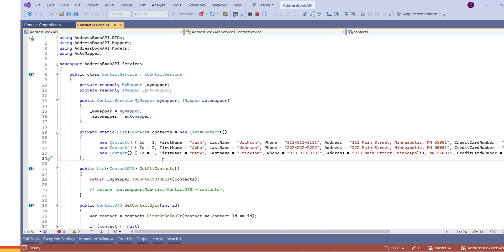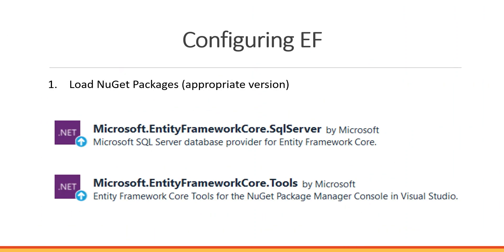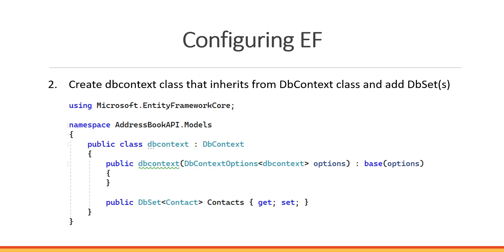After we're done with this project all the data will be in the database. So we're going to go through a few steps to configure Entity Framework. In the first step we'll load two packages: Microsoft Entity Framework Core SQL Server and Microsoft Entity Framework Core Tools. Then we'll create a class we'll call DBContext — it must inherit from the DBContext class that comes from the packages we'll load.